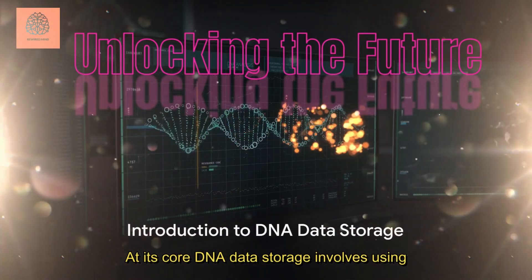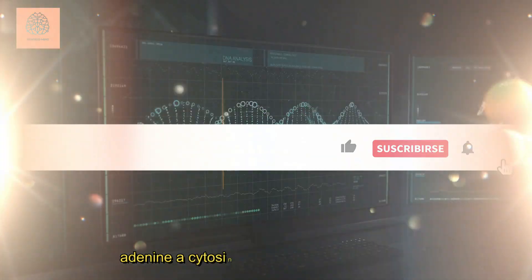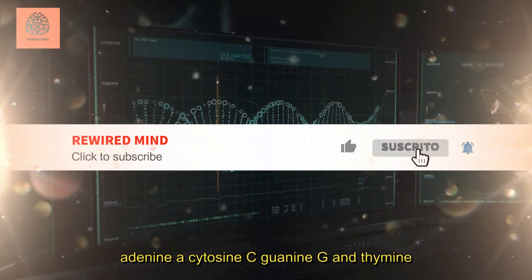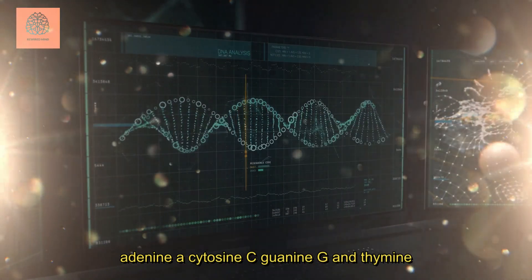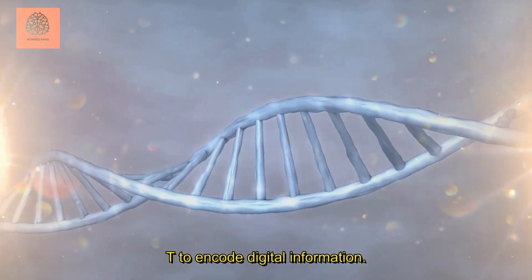At its core, DNA data storage involves using the sequences of the four nucleotide bases: adenine (A), cytosine (C), guanine (G), and thymine (T) to encode digital information.